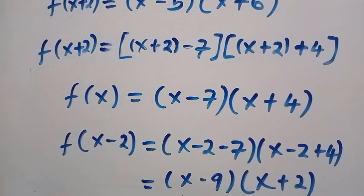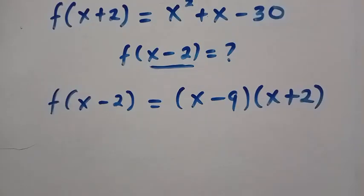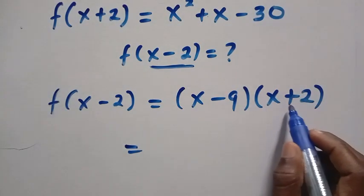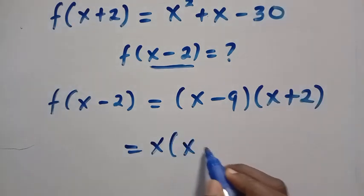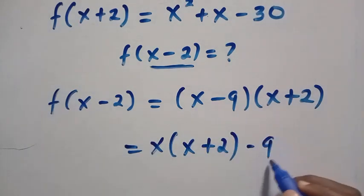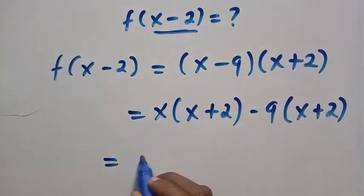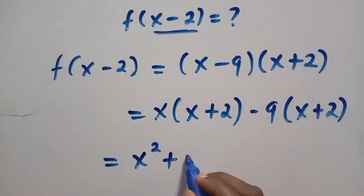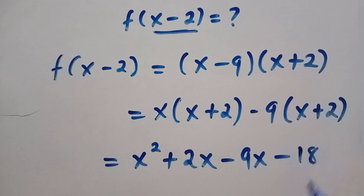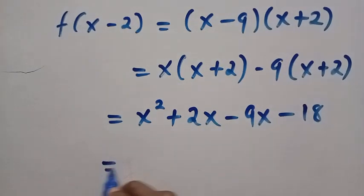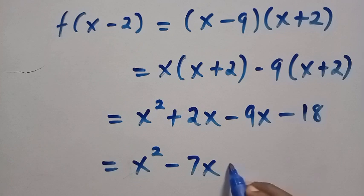By expanding this, we are going to have a full quadratic equation. We have x minus 9 and x plus 2. Expand this out by multiplying x with x plus 2. Here we have x bracket x plus 2, and also we have minus 9 bracket x plus 2. So x times x, that is x squared, plus x times 2, we have it as 2x. Then we have minus 9 times x, that is minus 9x, minus 9 times 2, that is minus 18. Getting this, we have x squared plus 2x minus 9x, this gives us minus 7x, then minus 18.